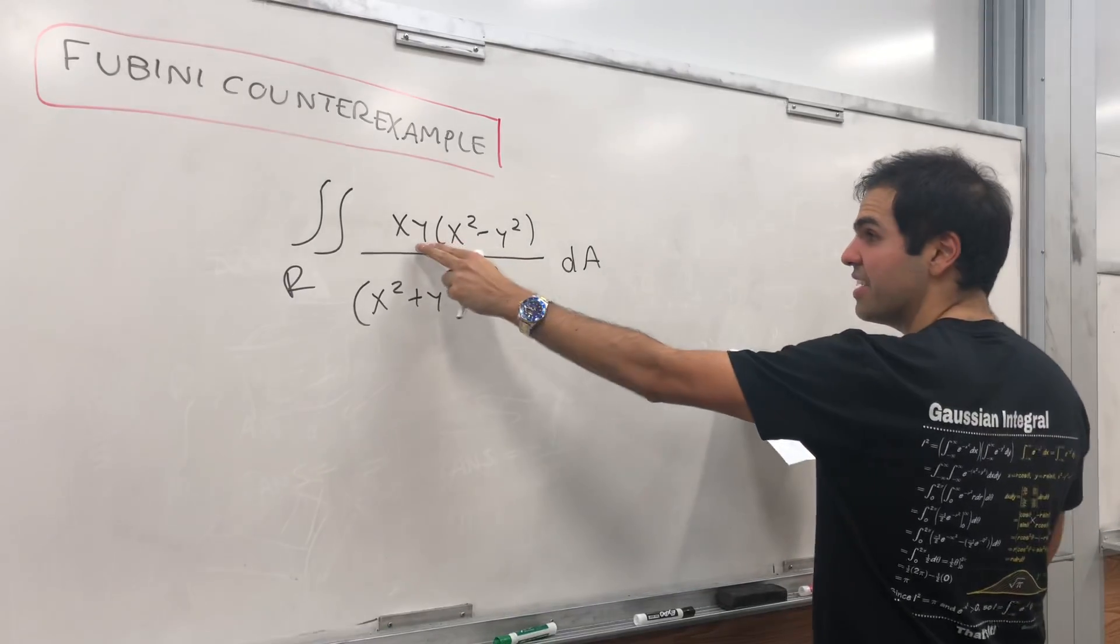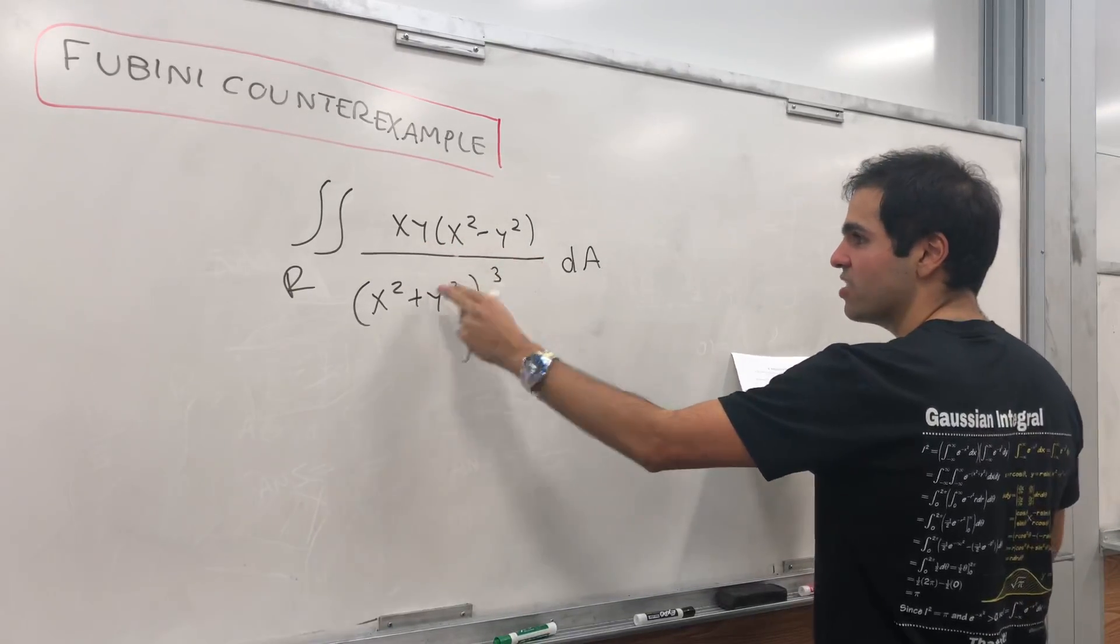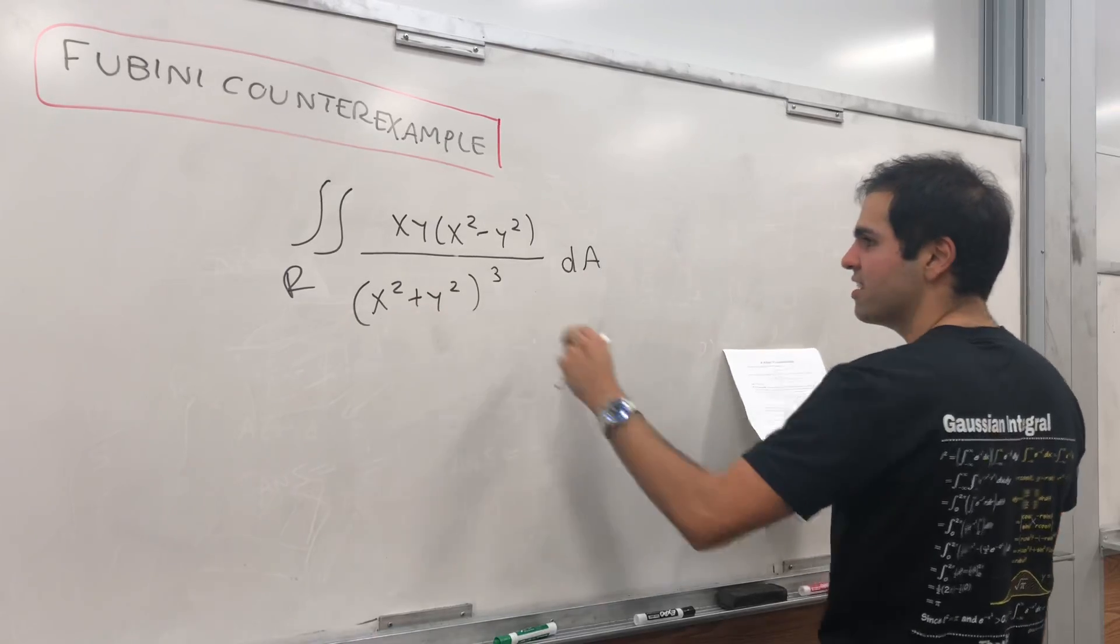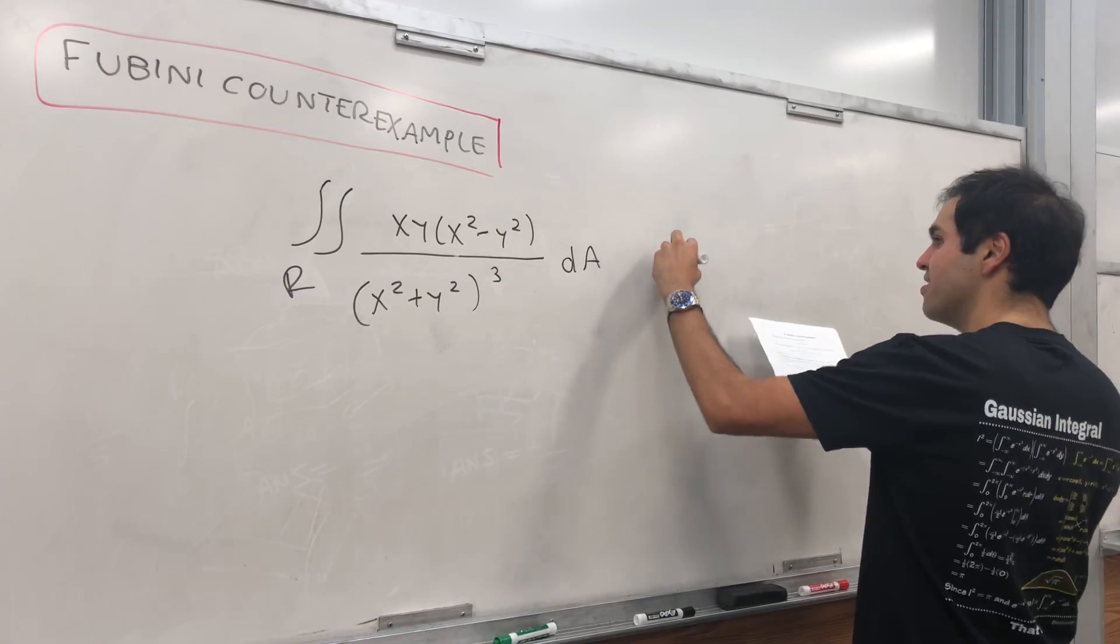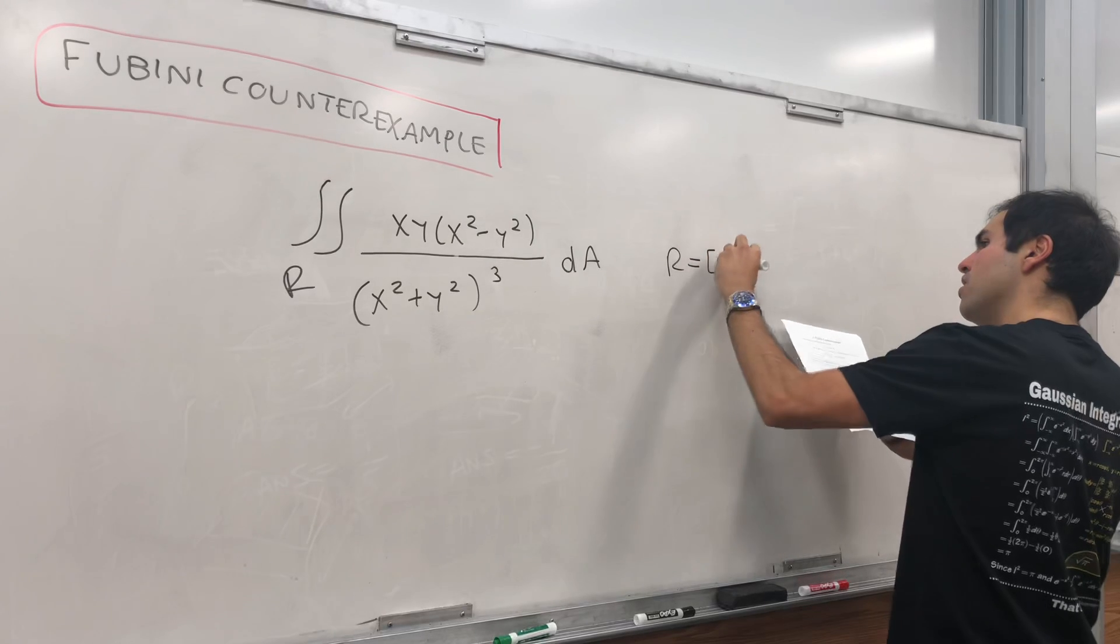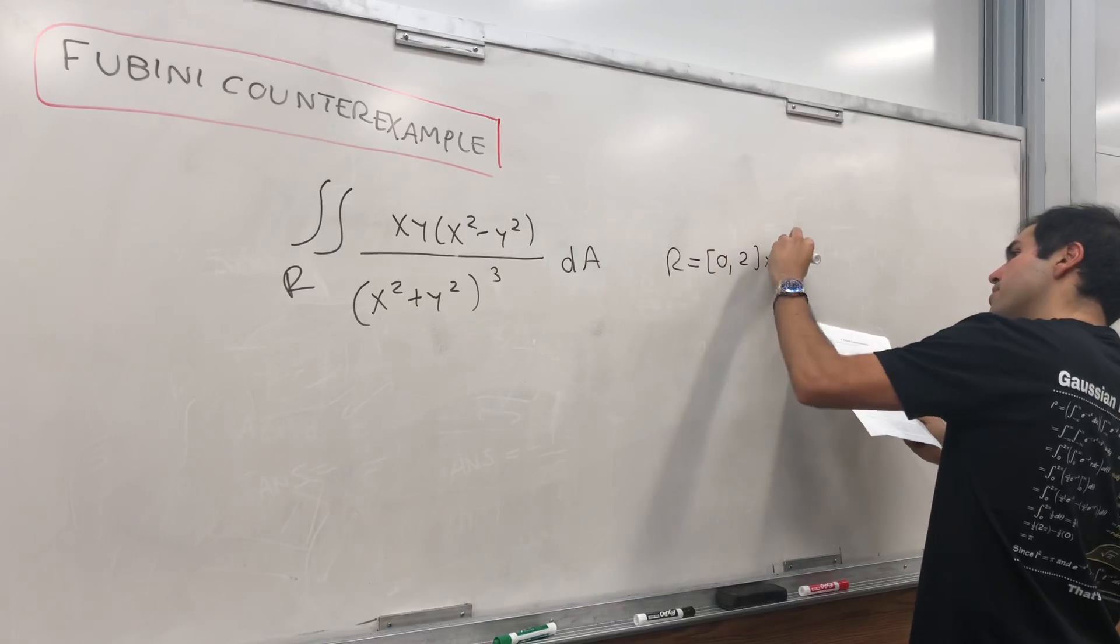So in particular, let's integrate the function xy times (x squared minus y squared) over (x squared plus y squared) cubed, where R is the rectangle [0,2] times [0,1].